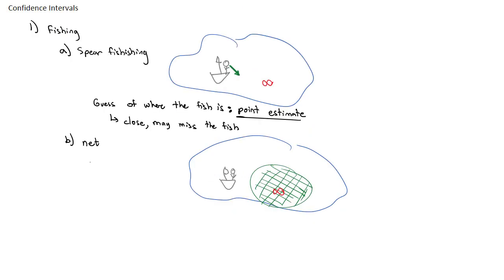This is what we call the confidence interval. It is a wider space around the point estimate to increase the probability that we actually catch the fish.